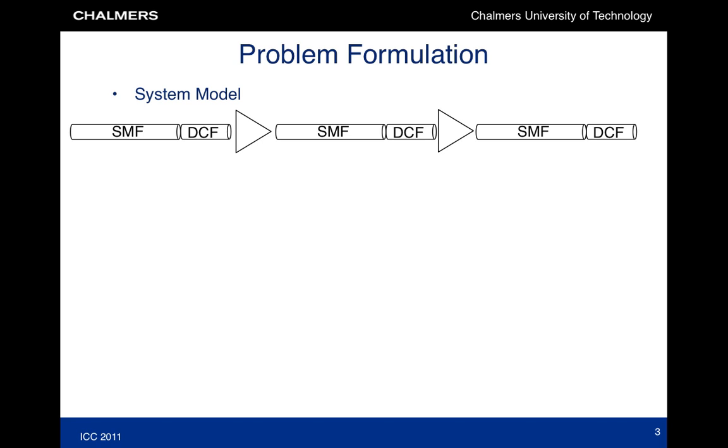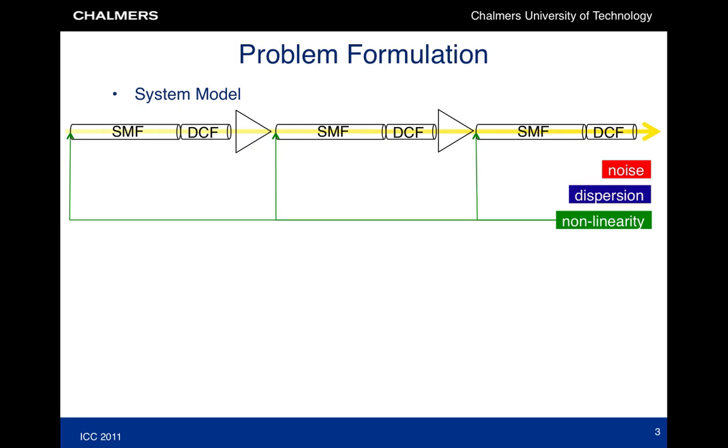The system we consider consists of multiple fiber spans with amplifiers in between. The optical signal is subjected to a number of effects. First of all, additive noise in the amplifiers. Secondly, dispersion in the fiber. And finally, non-linear rotations due to the interaction between the fiber and the optical signal.